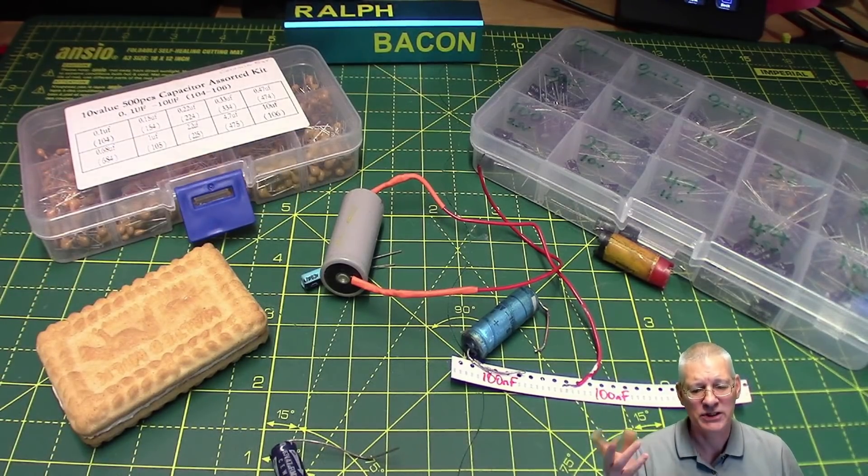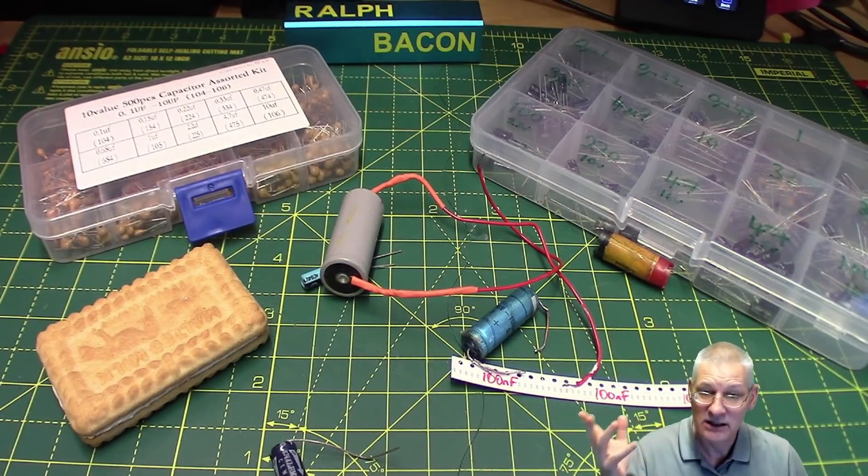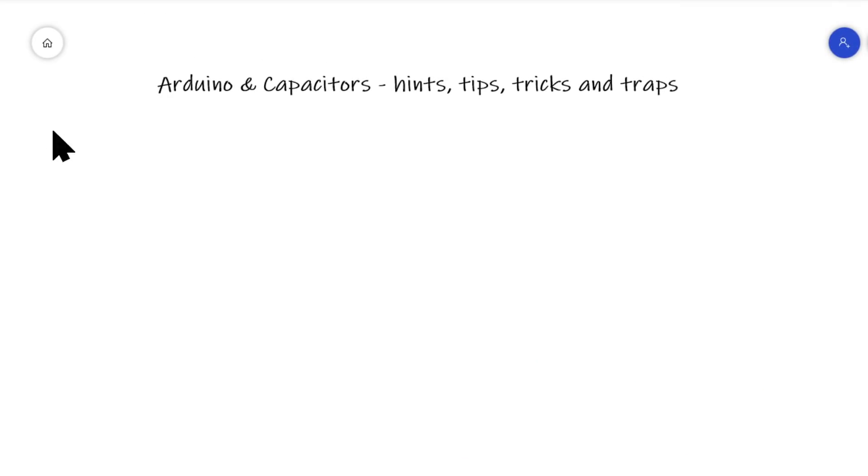Let's have a look in a bit more detail at what capacitors can do for us in an Arduino world using the whiteboard. Let's start by drawing the symbol for a capacitor. And it's pretty much like that. So you have the lead coming in. You've got the plate. Think of that biscuit that I showed you. There's the other plate. And there's the other lead.